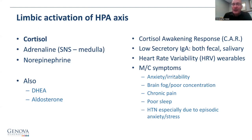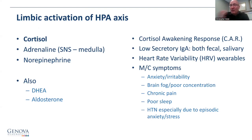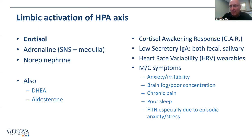There are lots of ways now to see if limbic activation is driving your patient's HPA axis and their symptoms. Most commonly: anxiety or irritability, poor concentration, worsening pain, poor sleep. This is the patient who shows up with white coat syndrome — at home their blood pressure is fine, but as soon as they arrive at the office, their limbic system kicks in and it goes straight up.